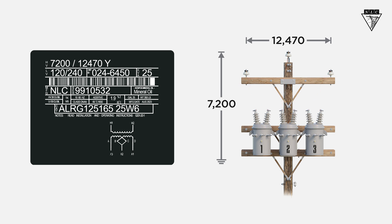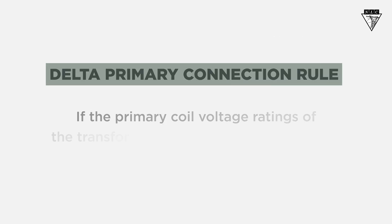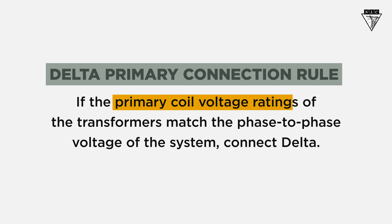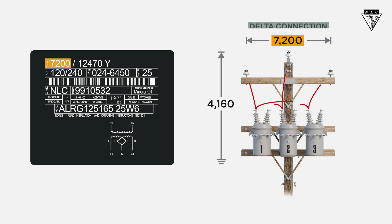Now let's look at how to determine a delta connection. The delta primary connection rule states: if the primary coil voltage ratings of the transformers match the phase-to-phase voltage of the system, connect delta. Here, the system voltage is 7200 volts and the primary coil voltage rating on the transformer is 7200 volts, so we should connect the transformers as delta. A delta connection involves connecting the primary to the system to maintain a phase-to-phase connection.